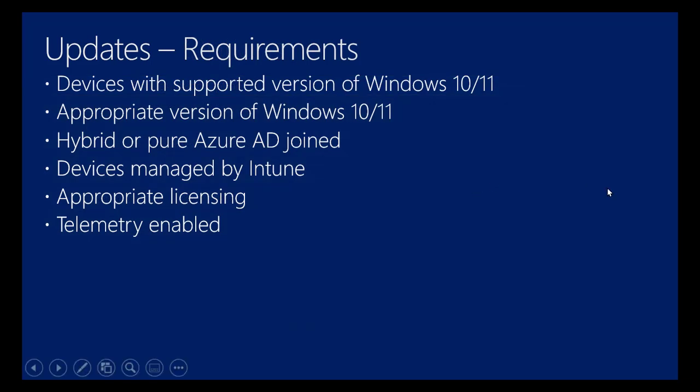In terms of requirements for using Windows Update for Business, you need devices running a supported version of Windows 10 or Windows 11 - specifically Windows 10 or 11 Pro, Enterprise, Education, or Pro Education. You need those devices either hybrid or pure Azure AD joined. The device must be managed by Intune, you need the appropriate level of licensing, and you need telemetry. The minimum telemetry setting for this to work is to set it as Required. You can configure telemetry settings as part of a device restriction policy.